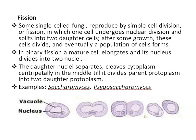Fission is commonly found in single-celled fungi, for example yeast. Here, single-celled fungi reproduce by simple cell division. In binary fission, a mature cell first elongates, then its nucleus divides into two nuclei, and these two daughter nuclei then separate by the division of cytoplasm. Cytoplasm divides by the formation of a septum in the middle of the cell, and ultimately two daughter cells are formed. This type of reproduction is found in yeast, Saccharomyces.